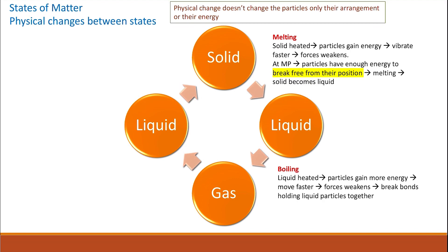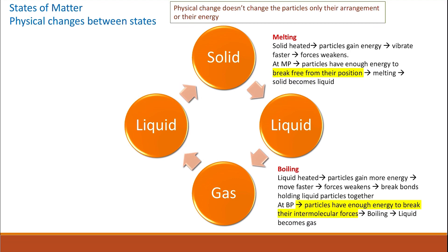Liquids can change to become gas — this is called boiling. The liquid is heated and the particles gain more energy, so the liquid particles start to move faster and the forces of attraction between the particles weaken, breaking the bonds that hold the liquid particles together. At boiling point, the particles have enough energy to break their intermolecular forces of attraction completely, and they change from liquid into gas where they are completely free to move.